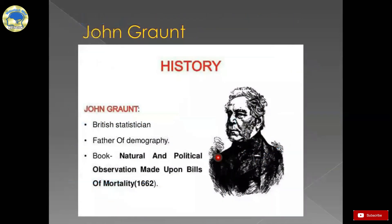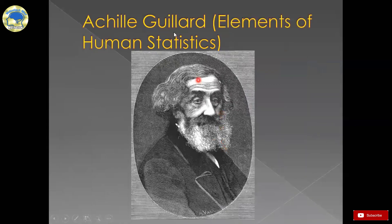I have included a picture from the internet to help you recognize the father of demography, John Grant. He is a British statistician and his well-known book is 'Natural and Political Observations Made Upon Bills of Mortality,' published in 1662. The next photo is Achille Gillard, who used the word demography for the first time. His book is 'Elements of Human Statistics,' in which he used the word demography for the first time.